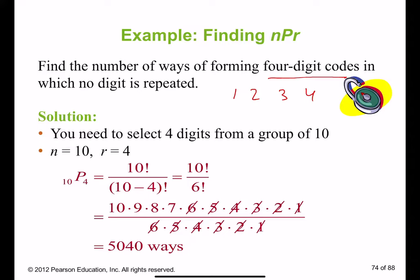Out of 10, how many digits we have? 10 digits. Out of 10, we have to use four of them. Let's say it can be 5, 6, 1, 9. This is my code. So I chose four out of 10.